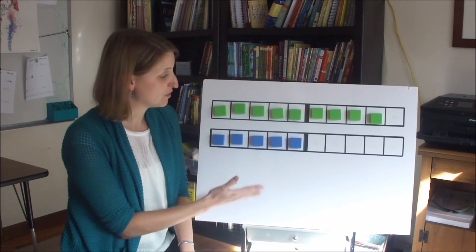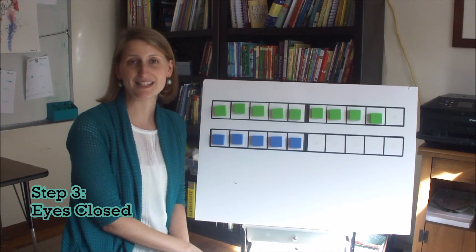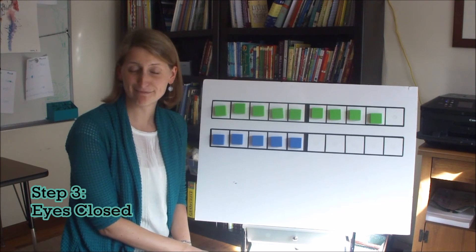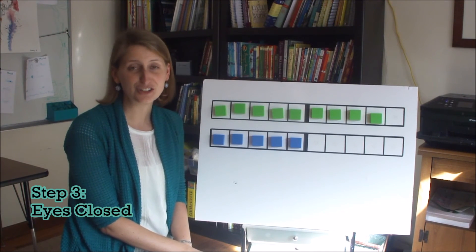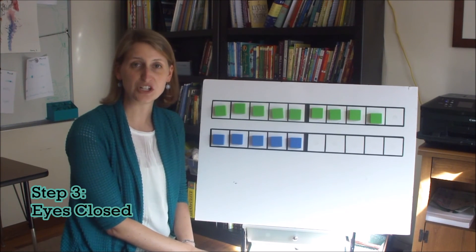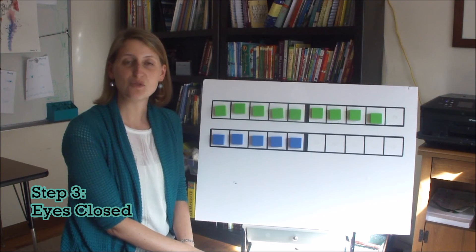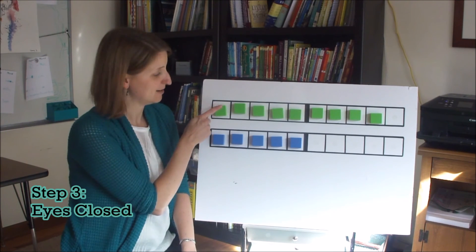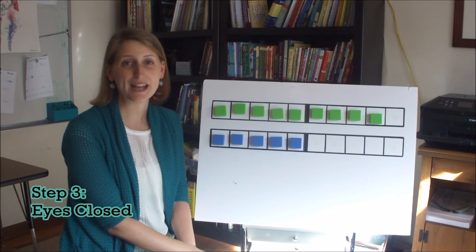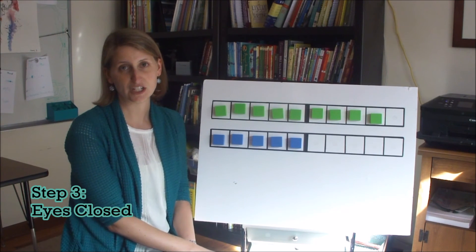And then after a child can do that readily, the last step is eyes closed. And in this step, I encourage you to literally have your child close her eyes. You can have the blocks nearby or you can just put them away entirely. And when she's solving 9 plus 5, you want to ask her to imagine the 9 blocks on one 10 frame and the 5 blocks on the other, and then to imagine moving one block over to complete the 10.